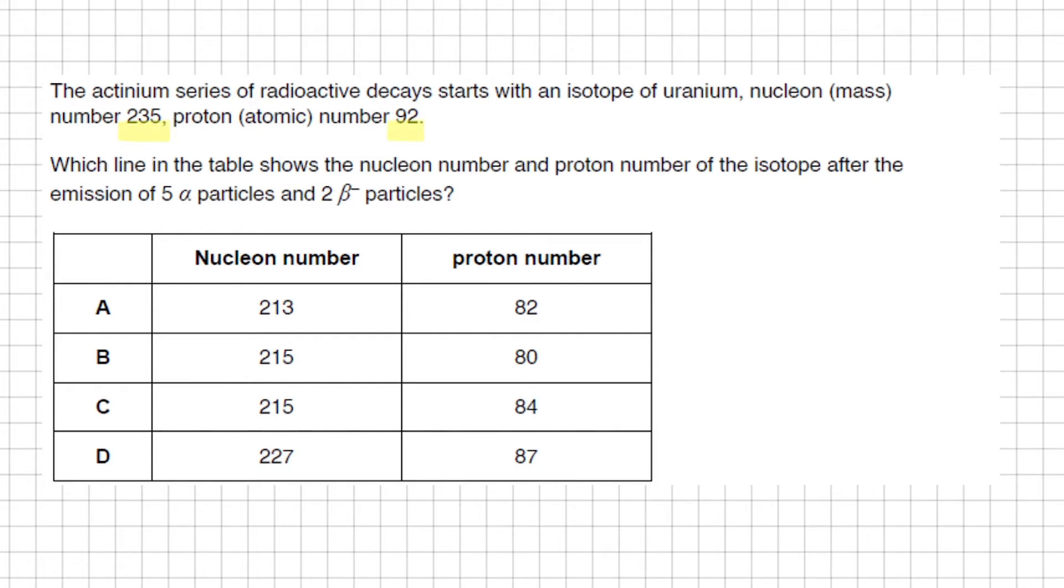Which line in the table shows the nucleon number and proton number of the isotope after the emission of five alpha particles and two beta particles? Nucleon number is just another word for mass number and proton number is the atomic number.